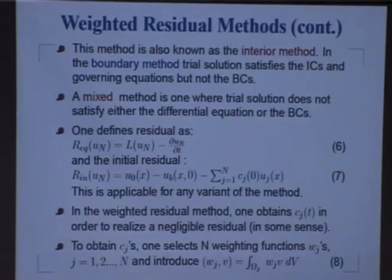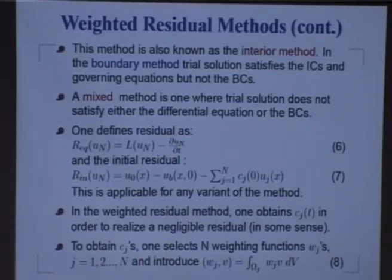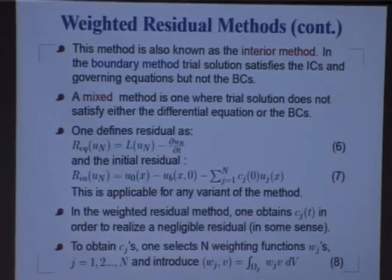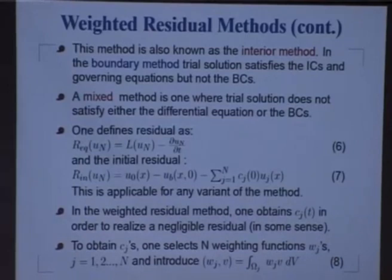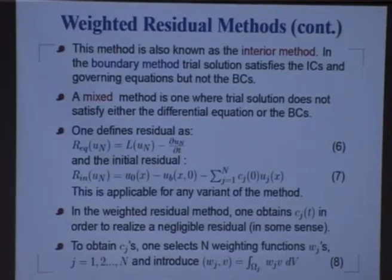In contrast, you can also have boundary methods, where the trial solution is chosen in such a way that it tries to satisfy the initial conditions and governing equations as accurately as possible but does not satisfy the boundary condition. So, boundary methods do not satisfy boundary conditions, and interior methods satisfy the boundary condition — this is the essential difference. The third category could be a mixture of the two, where the trial solution need not satisfy either the differential equation or the boundary condition.